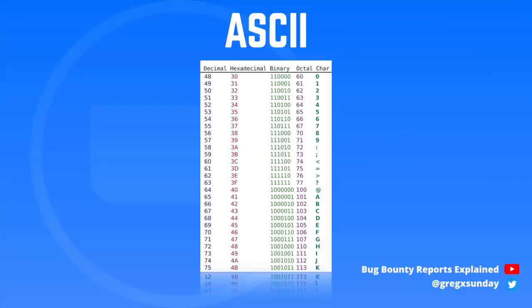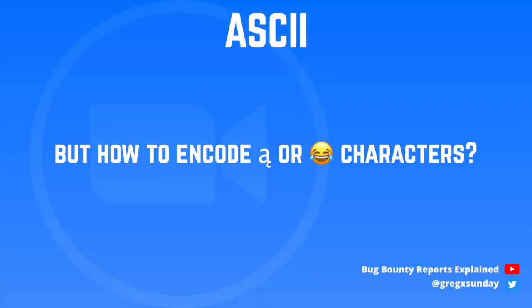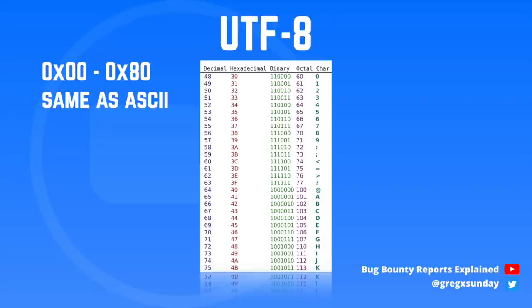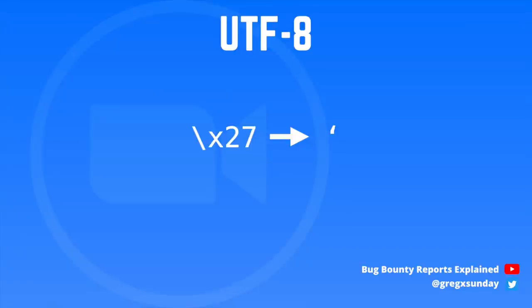Before we get to the bypass, let's see how ASCII and UTF-8 work. ASCII is a character encoding standard used to encode 128 characters as text. For example, 0x41 is a capital A and 0x61 is a small a. But 128 characters offered by ASCII is simply not enough — we need a way to encode special characters or emojis, and that's where Unicode comes in, or more specifically UTF-8. The first 128 characters in UTF-8 work exactly the same as in ASCII. However, if the byte value is greater than 0x81, it means that more than one byte is used to describe the next character.